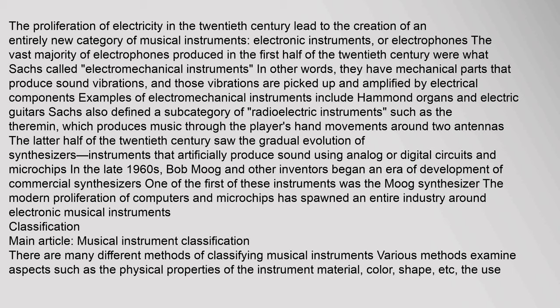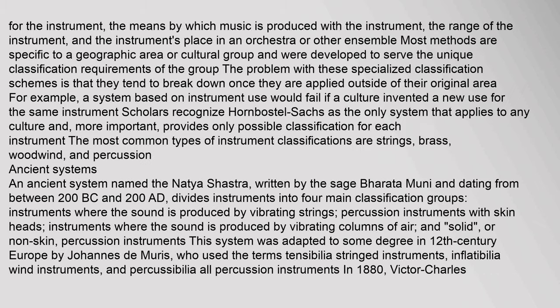There are many different methods of classifying musical instruments. Various methods examine aspects such as the physical properties of the instrument, the use of the instrument, the means by which music is produced, the range of the instrument, and the instrument's place in an orchestra or other ensemble. Most methods are specific to a geographic area or cultural group and were developed to serve unique classification requirements. The problem with specialized classification schemes is that they tend to break down once applied outside of their original area. Scholars recognize Hornbostel-Sachs as the only system that applies to any culture and provides only one possible classification for each instrument.